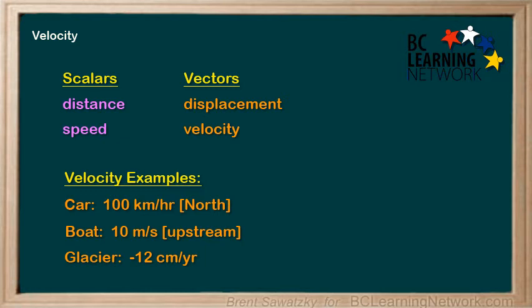Note the units. Kilometers per hour is common for a car's velocity. Meters per second is the most standard unit for velocity that we'll see. Centimeters per year is for something going really slow. Really, the units for speed or velocity can be anything, where you have a displacement unit on the top and a time unit on the bottom.